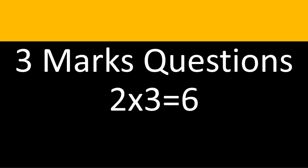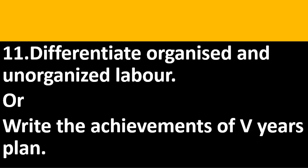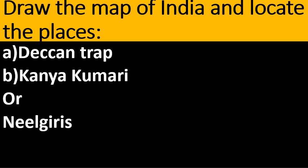Three-mark questions. Question 9: Write the contributions of Krishnaraj Wadiyar IV, or: What are the impacts of the British education system on Indians? Question 10: Differentiate organized and unorganized labor, or: Write the achievements of the Five Year Plan. Final question: Draw the map of India and locate the places given — Kanyakumari, with an option for Nilgiris.